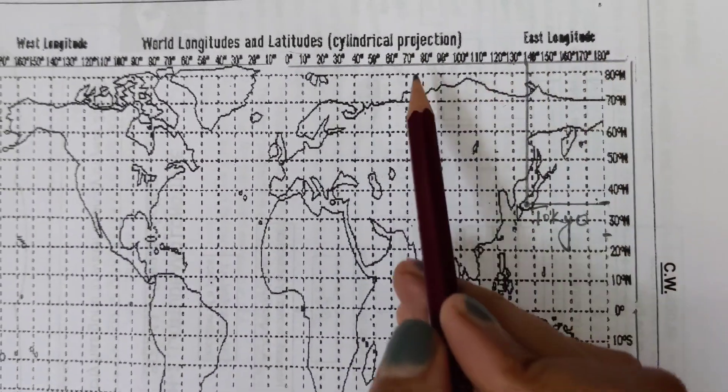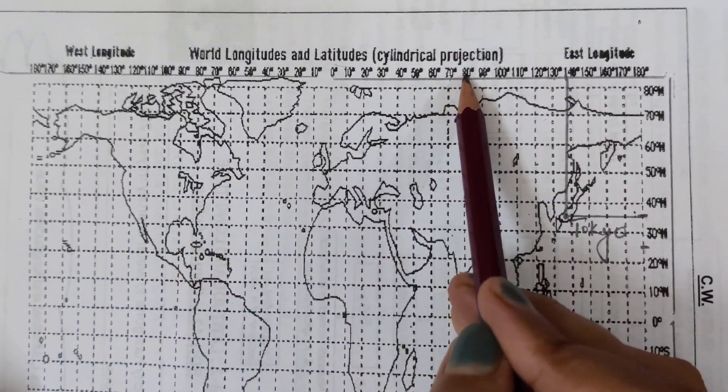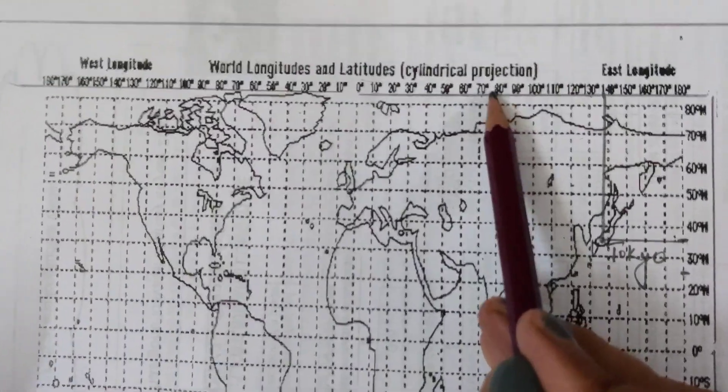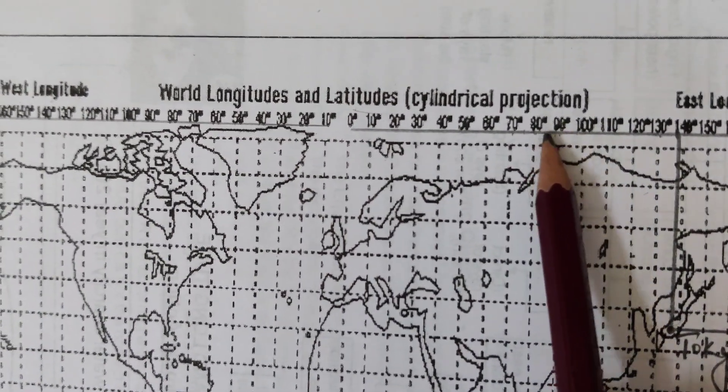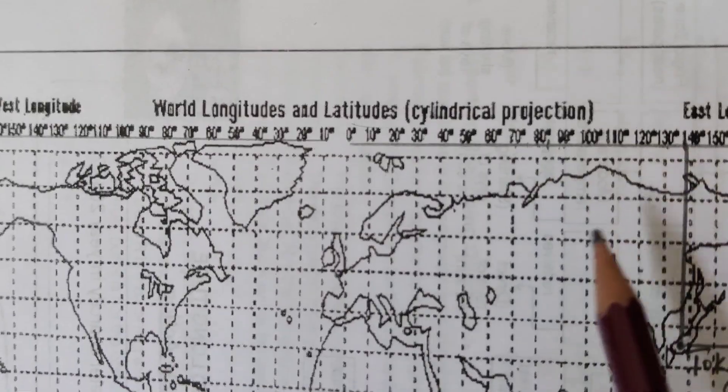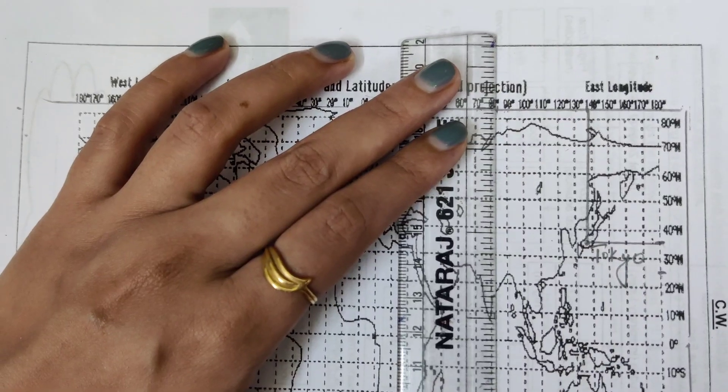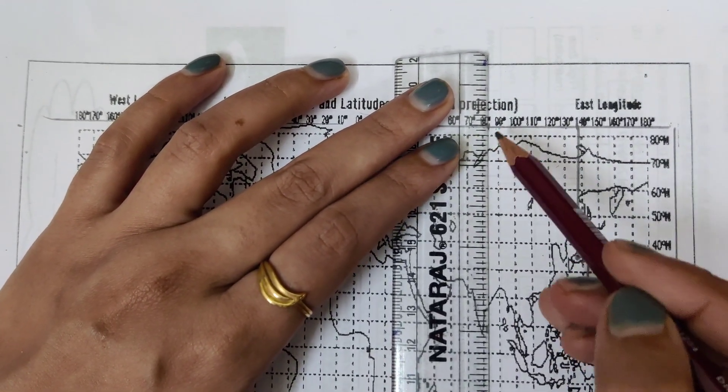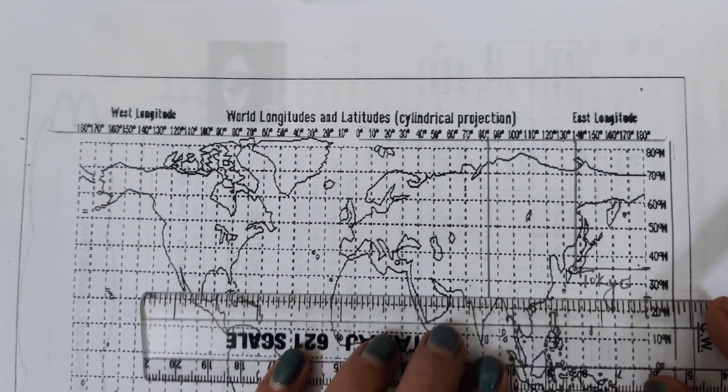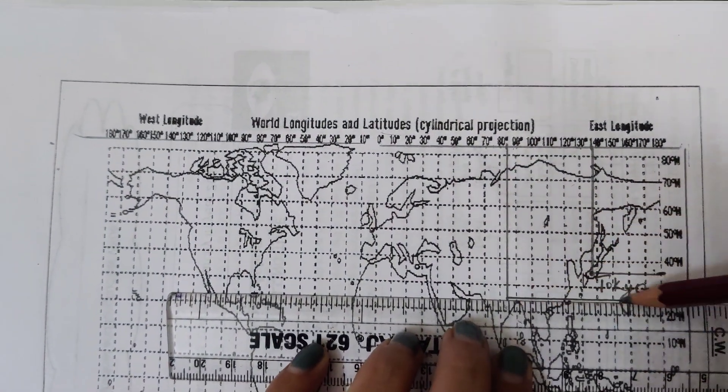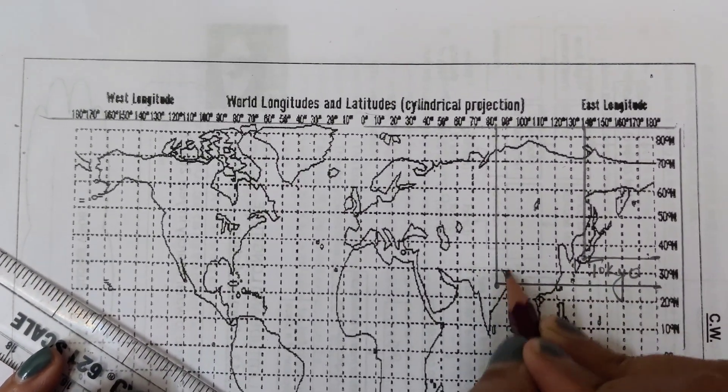This is east, so 83. Be very careful because sometimes you get confused. Some students mark it between 70 to 80, but count correctly: 70 to 80, 80 to 90, 90 to 100. We need 83, so just after 80. Do not worry about being at the exact place. In grids, you cannot be specific about each degree; one or two degree variations are normal. See, we have marked Varanasi at the correct place.